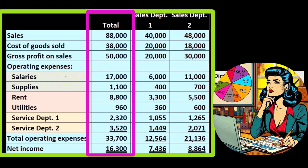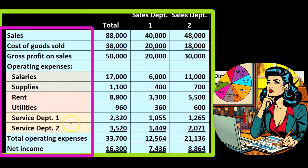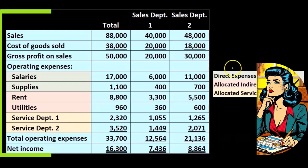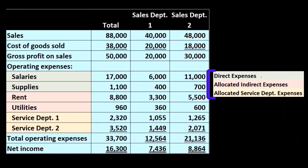We have the operating expenses, which we're pulling from the worksheet: the salaries, the supplies, the rent, the utilities. And then we have service department one and two, which we allocated out to the sales and operating departments. The items in green are those direct expenses, the items in red are the indirect or allocated indirect expenses, and the allocated service department is in yellow.